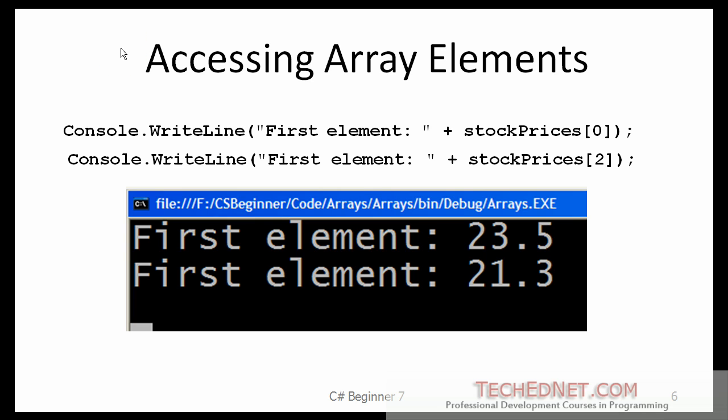Accessing array elements. Here, we are accessing the first and the third elements of the array. Keep in mind that the first element always has an index of 0, and the last element has an index of size minus 1, in this case 3.